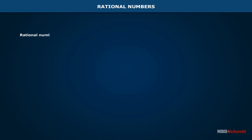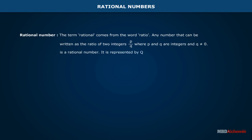Rational number. The term rational comes from the word ratio. Any number that can be written as the ratio of two integers p/q, where p and q are integers and q is not equal to 0, is a rational number. It is represented by Q.